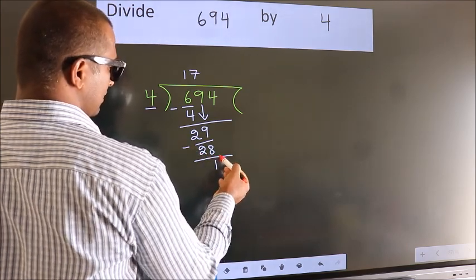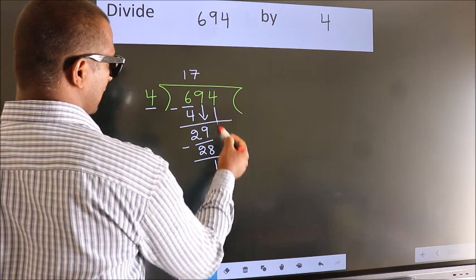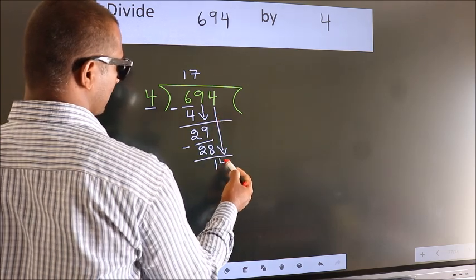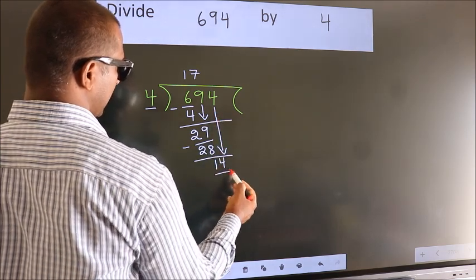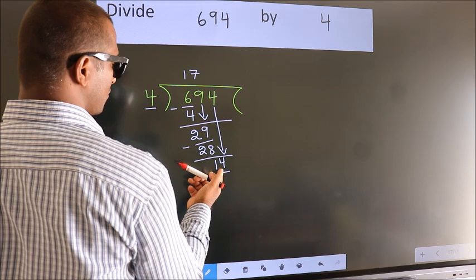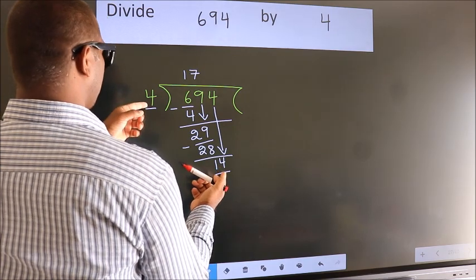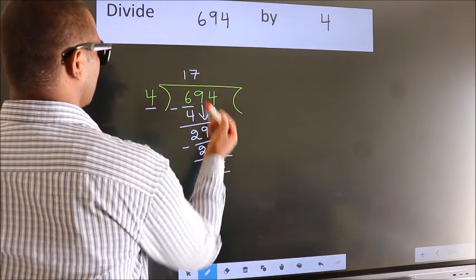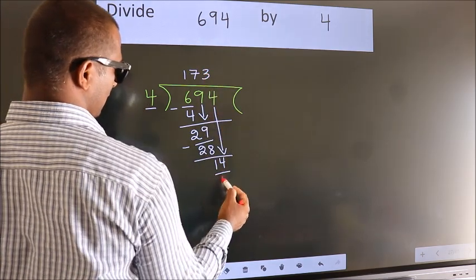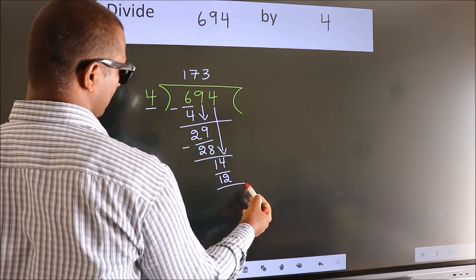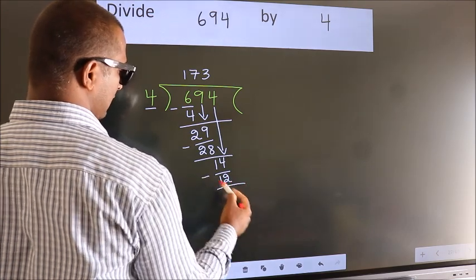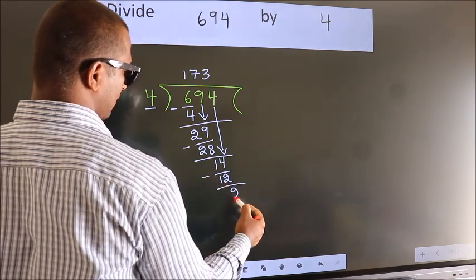After this, bring down the beside number, so 4 down, so 14. A number close to 14 in the 4 times table is 4 threes 12. Now we subtract, we get 2.